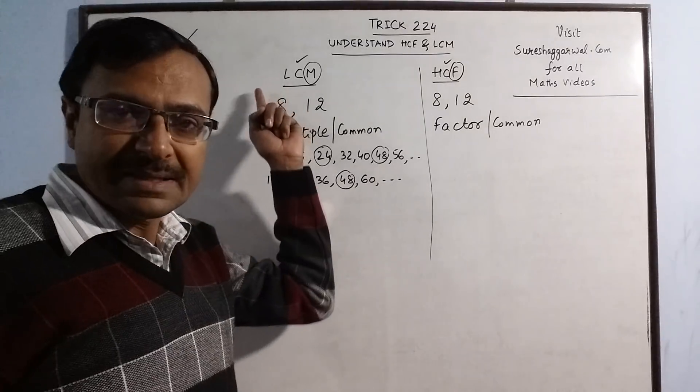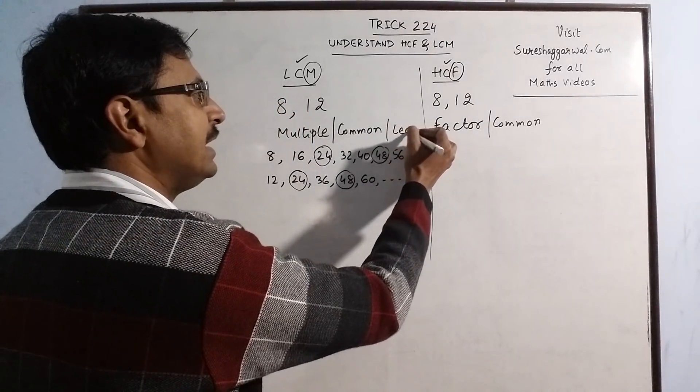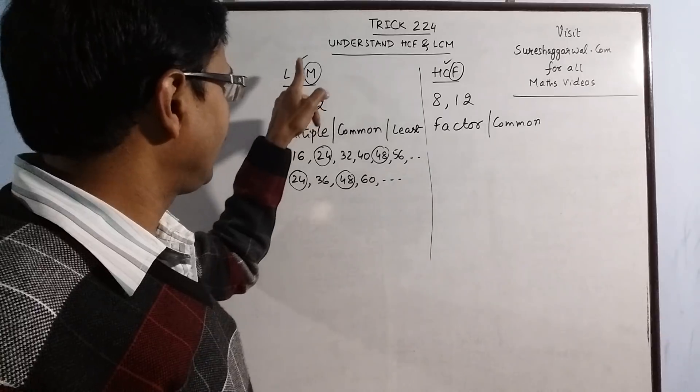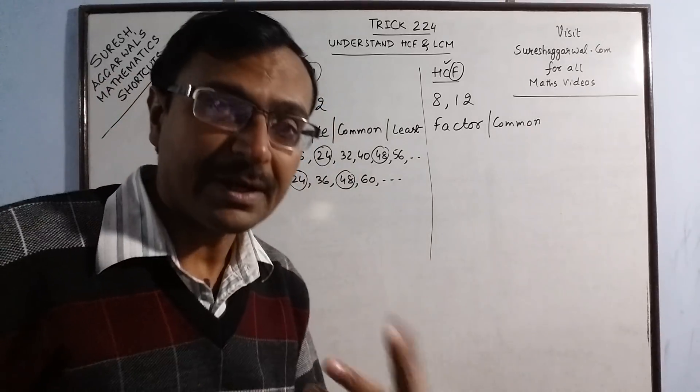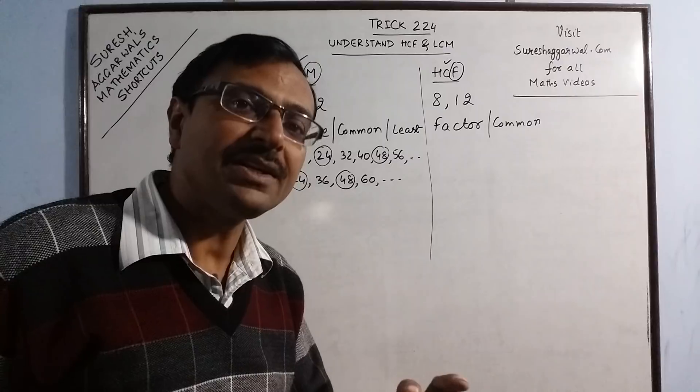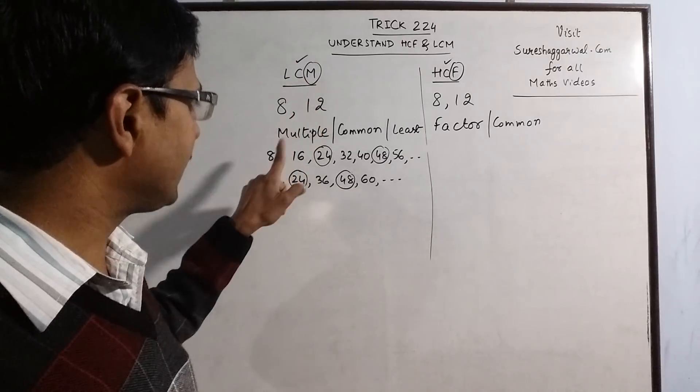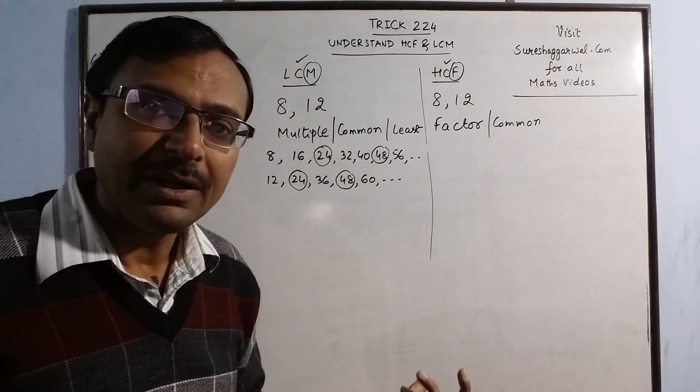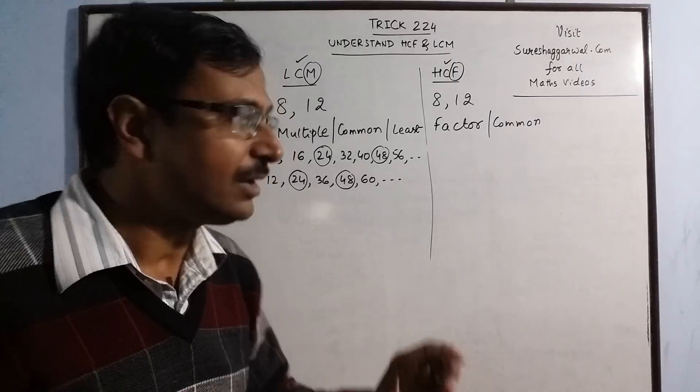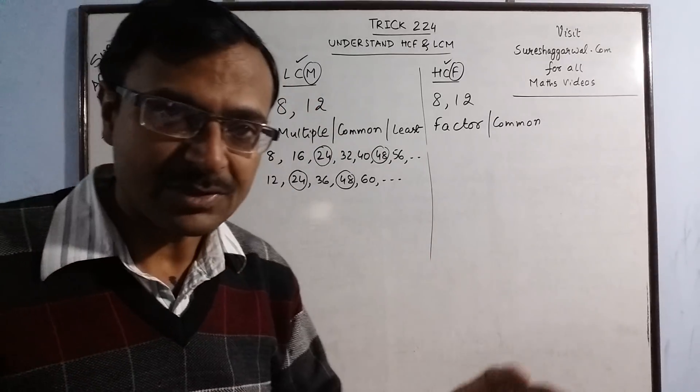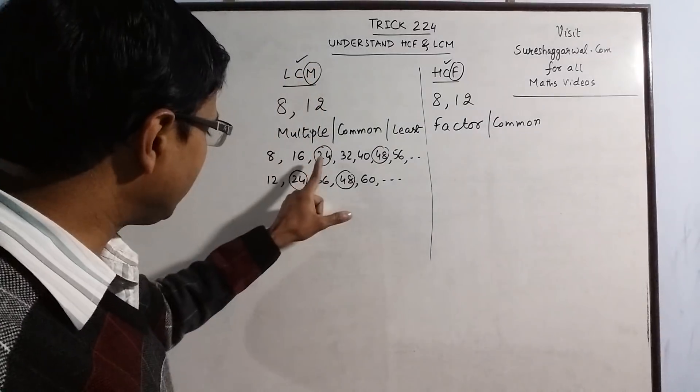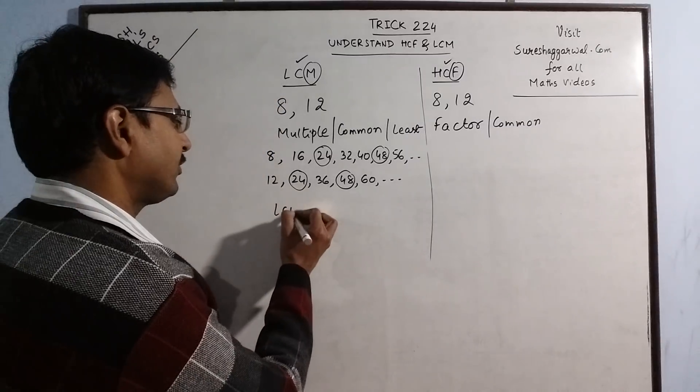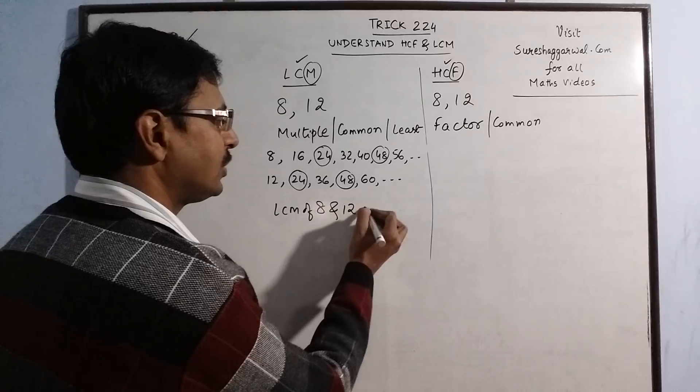Now what does the final alphabet L stand for? L stands for least. Now obviously in LCM you have least common multiple, so L comes first. But for understanding the meaning you need to understand it in the reverse order. First the meaning of multiple, then what are common multiples, and now finally you arrive at the answer once you come at the third alphabet that is L. L stands for least, least means the smallest. Now see 24 is the smallest multiple which is common in both the tables. So LCM of 8 and 12 is 24.